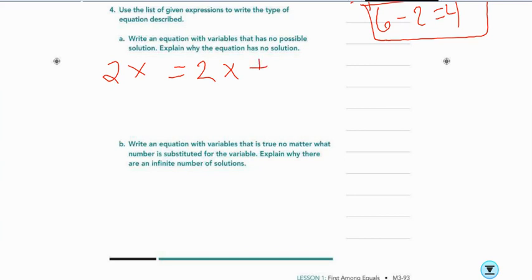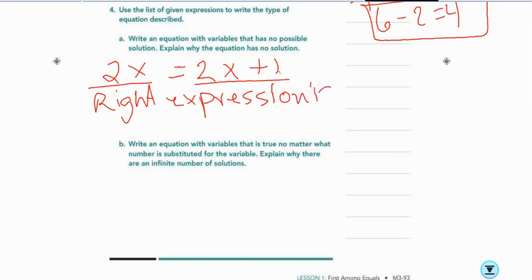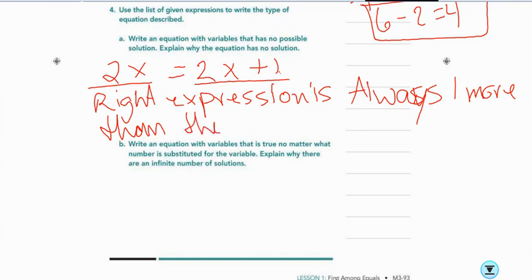But if I put a 1 on it, this will always be, this side will always be 1 more than the other side. Because they're the same, except this side has 1 more. So, they are the same, except 1 is 1 more than the other. But the right expression is always 1 more than the left expression.